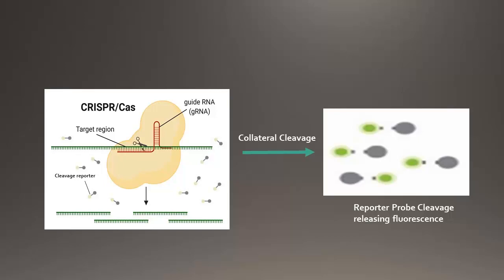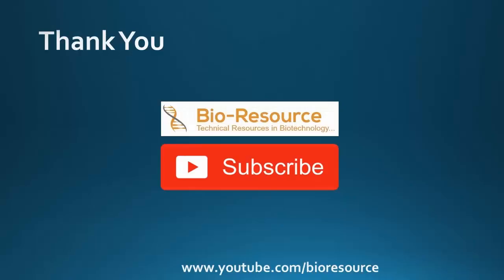The guide RNA is the sequence which scientists provide that has a matching sequence to the pathogen of interest. Once a perfect match is found, the Cas gets activated and cleaves the neighboring sequences, including the reporter probe. This results in the release of fluorescence, and the presence of the target pathogen can be identified.